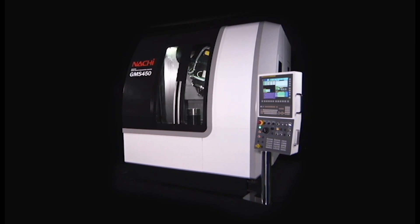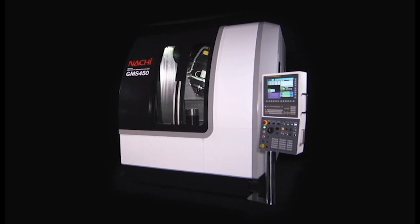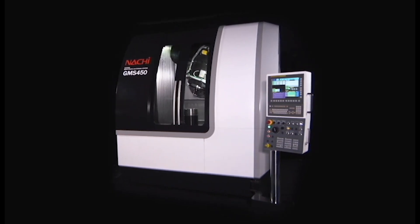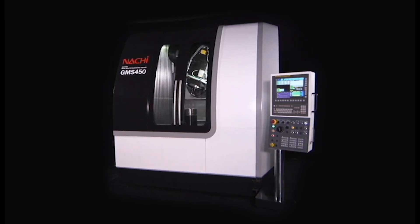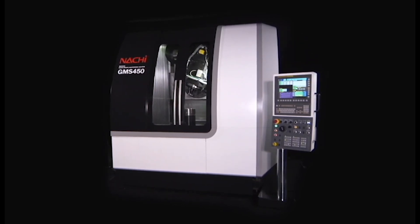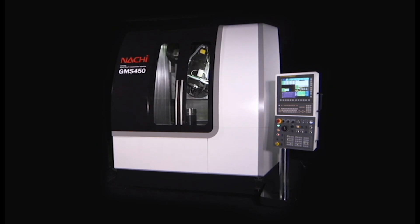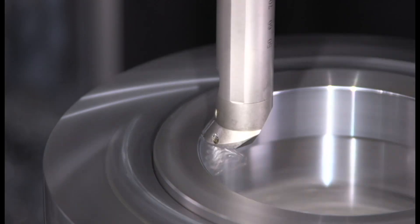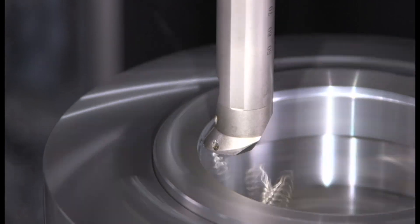Nachi's Skiving Gear Shaping Machining Center GMS450 is a skiving machine with a combination of turning and drilling functions that we developed for high accuracy and superior performance gear manufacturing. With the GMS450, you can do three jobs on one machine.